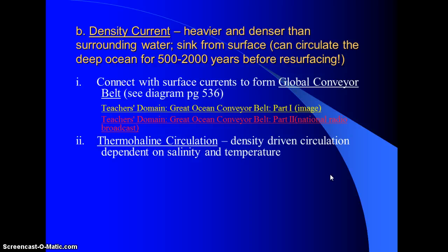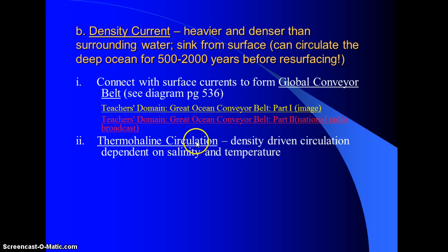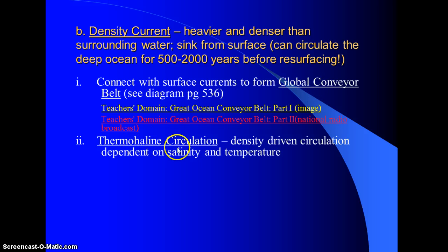The global conveyor belt is driven by gravity and density. Density has two variables that impact it: temperature and salinity. 'Thermal' means temperature; 'haline' is another name for salt. So we have temperature and salt-driven circulation, and we can call this thermohaline circulation.